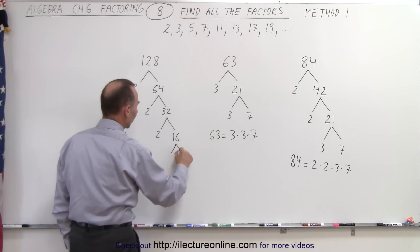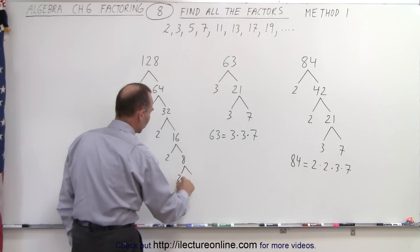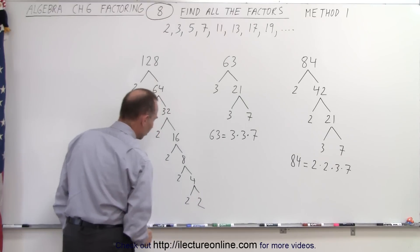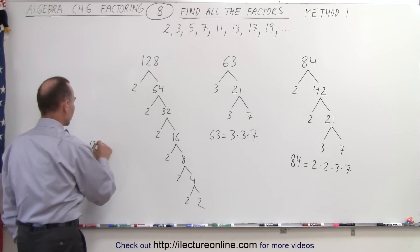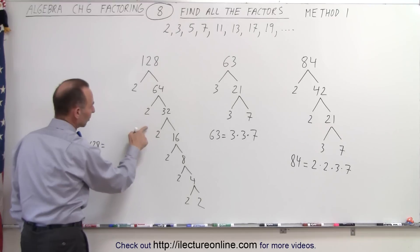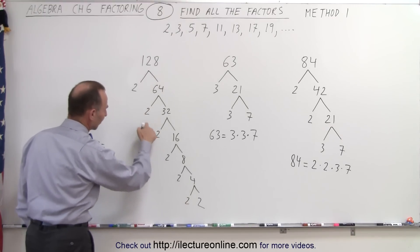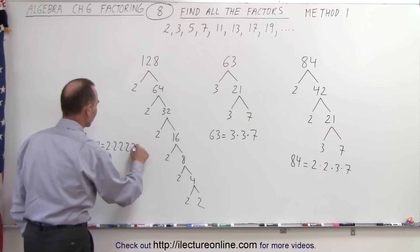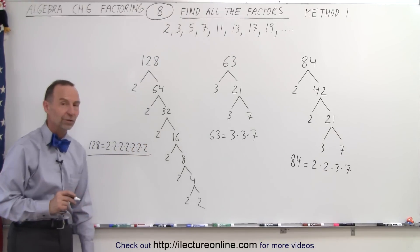16 is still even, so that's divisible by 2, which gives us 8, which is still even. Divisible by 2, which gives us 4, which is still even. And that gives us 2 and 2. Notice then that 128 can be written as 2 times 2 times 2 times 2 times 2 times 2 times 2 — that's 7 factors. So 2 times 2 times 2 times 2 times 2 times 2 times 2. There are all 7 factors of the number 128.